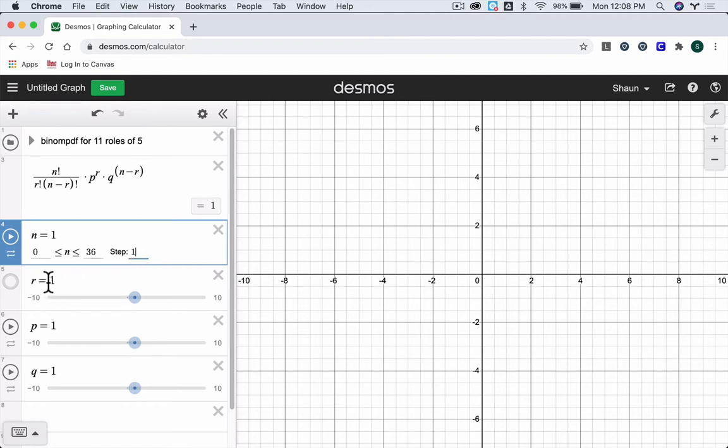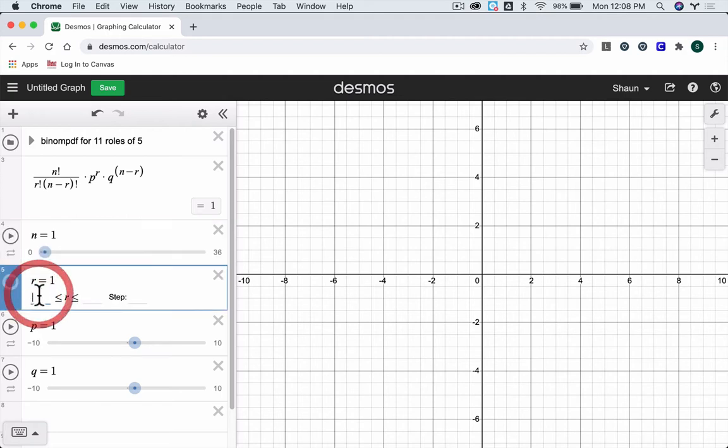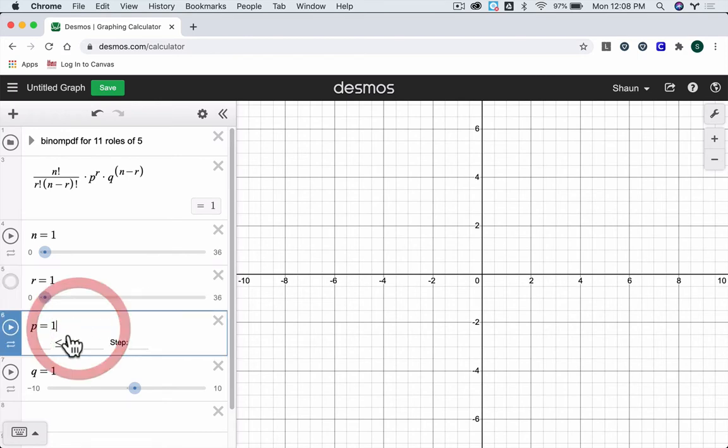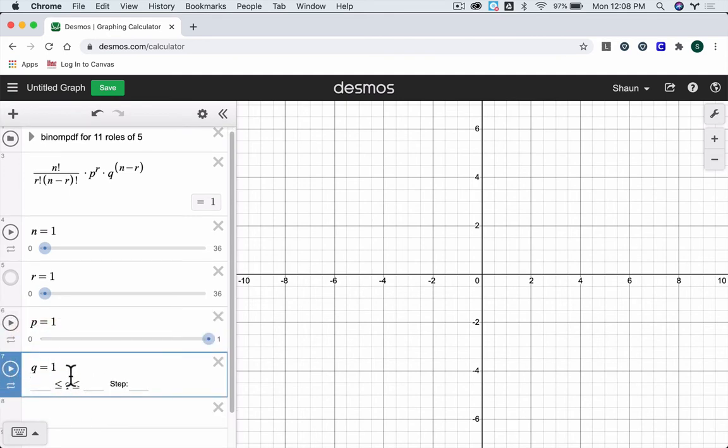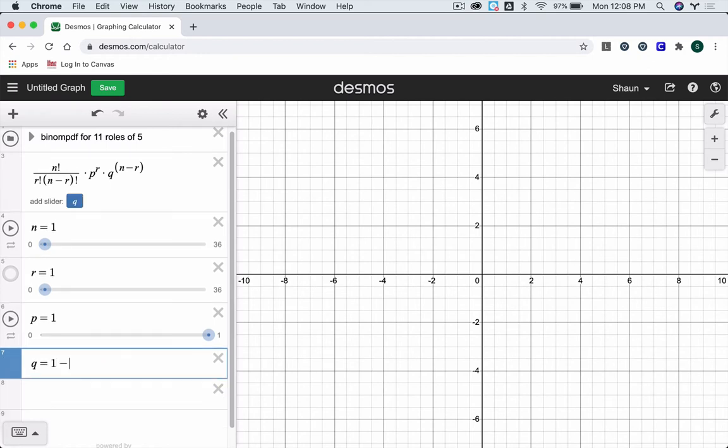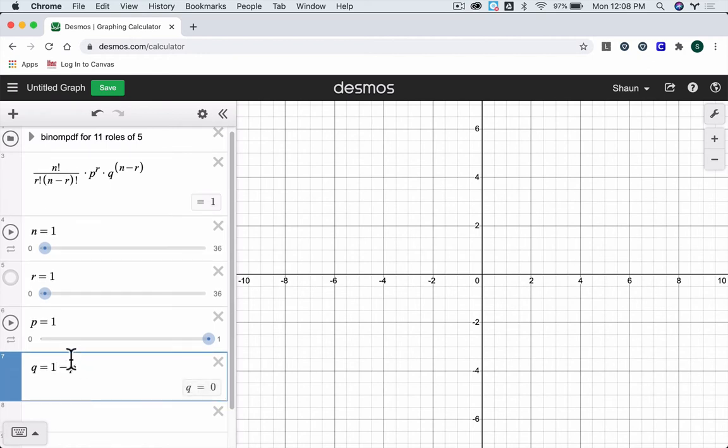And then I go to r. r is the number of successes that we're looking at. And again, I'm going to limit it between 0 and 36. It corresponds to this experiment. Then the probability here, I'm going to go from 0 to 1. Remember the lowest probability is 0. The highest is 1. I'm going to go up by 0.01s. And then q, I'm going to say is, instead of giving it a range, I'm going to say it's 1 minus p. Remember the binomial probability that whatever p is, q is 1 minus p. It's essentially the complement of that. All right.